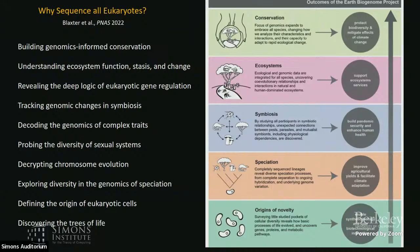Why even think about sequencing all eukaryotes? This digital repository of life will allow us to address many fundamentally important questions in biology — from accurate phylogenies to gaining a comprehensive understanding of genome evolution, the origins of eukaryotic species, speciation processes, and understanding the composition and functioning of complete ecosystems. This knowledge will be essential for synthetic biology, adaptive agriculture, human medicine, conservation biology, and mitigating the effects of climate change.